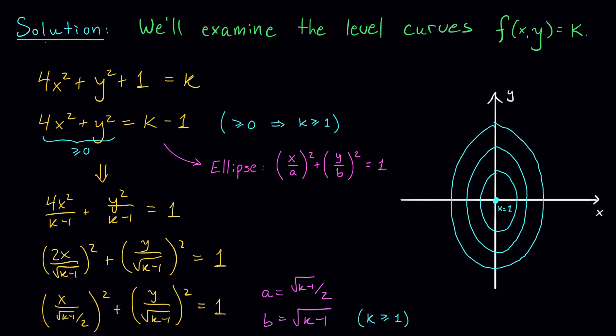Okay, so there you have it, our contour plot. When k increases, the ellipses are getting larger. So let's now raise these level curves up to the appropriate heights and build our exoskeleton.